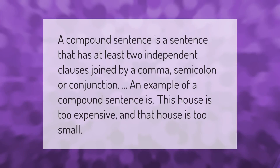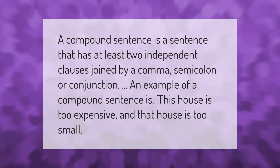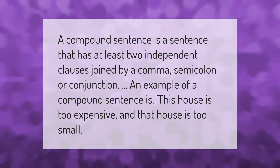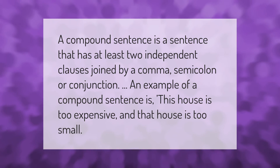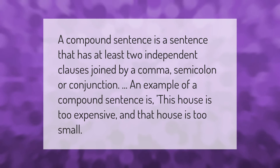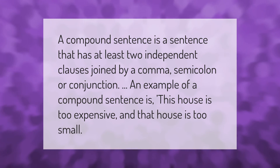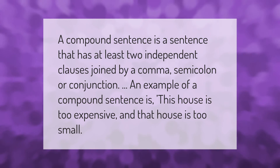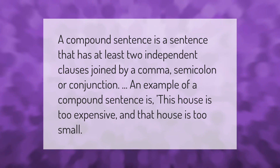A compound sentence is a sentence that has at least two independent clauses joined by a comma, semicolon, or conjunction. An example of a compound sentence is: 'This house is too expensive and that house is too small.'